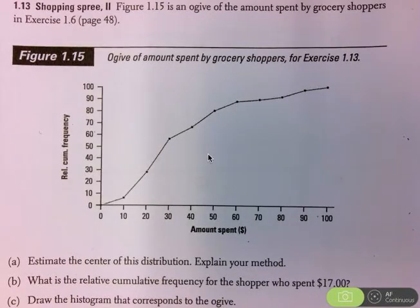Hi there. Question 1.13. I only wanted you to do parts A and B. Question C asks you to work backwards and draw the histogram from the ogive, and that's just not a skill that I think is that important. It's much more important to be able to look at the question in context and interpret what you see.